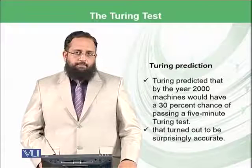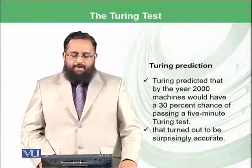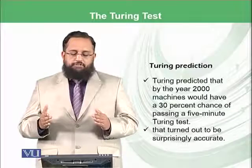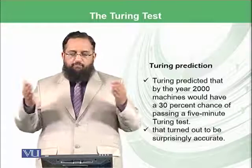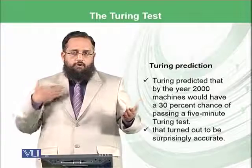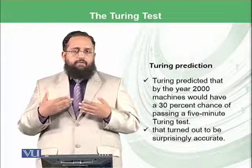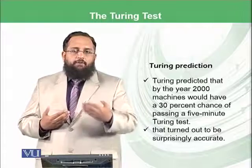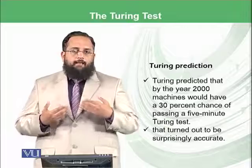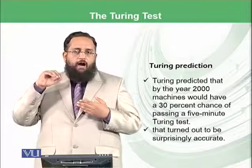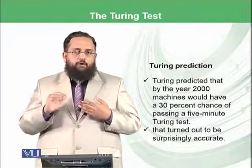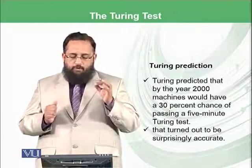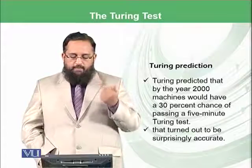Turing's prediction: Turing predicted that by the year 2000, machines would have a 30% chance of passing a 5-minute Turing test. This means you are communicating constantly for 5 minutes to a machine and you would not realize that this was a machine or a human. He proposed in 1950 that after 50 years, by the year 2000, 30% of the time your system would be doing perfectly and would be able to pass the test.